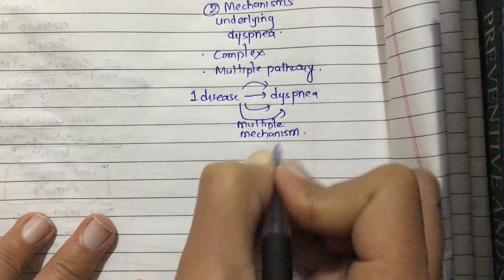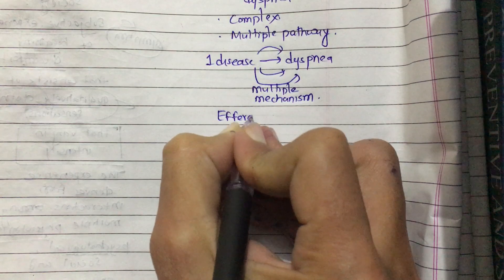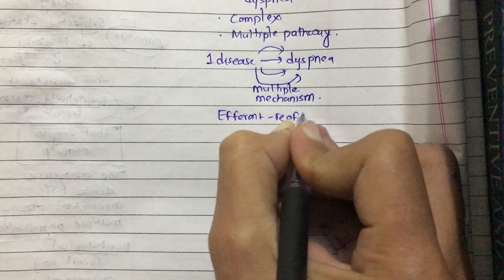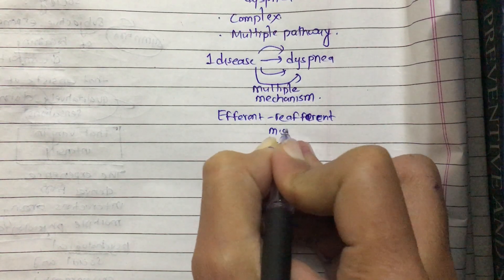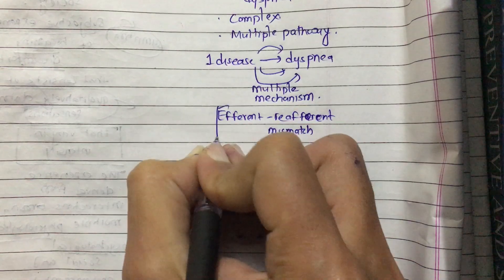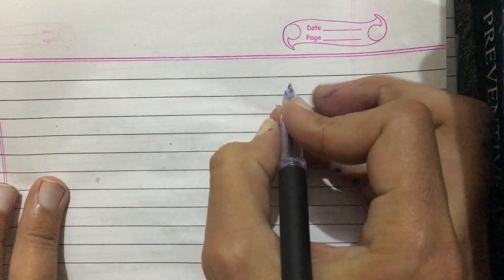The main mechanism underlying dyspnea is efferent-reafferent mismatch. This means that there is a mismatch in the efferent and afferent pathways controlling the respiratory muscles and the centers of respiration.